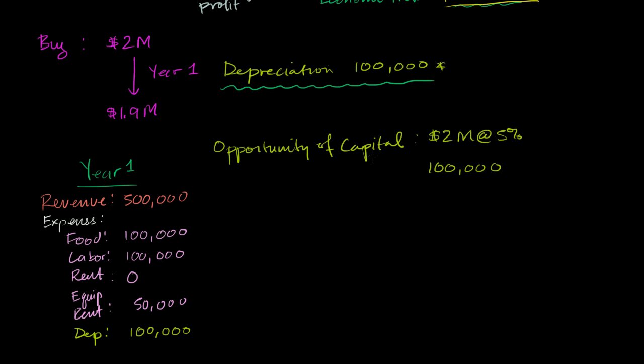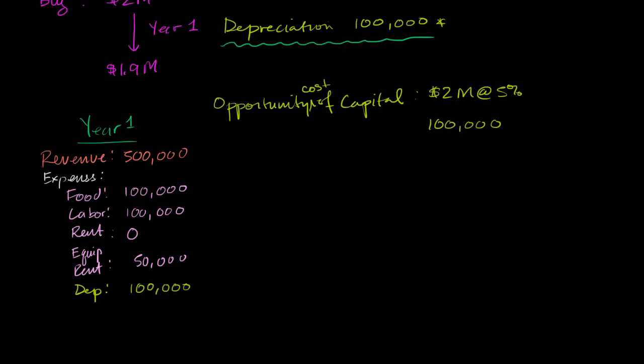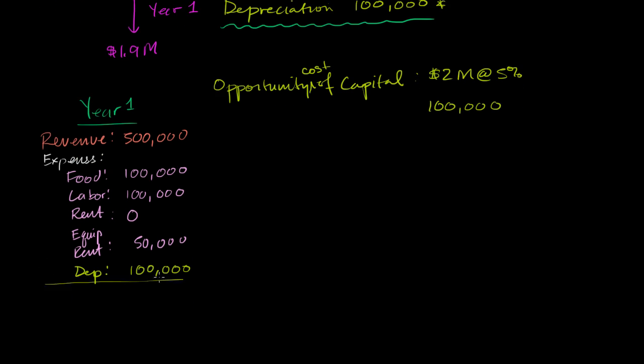We don't think about the opportunity cost of capital, what we could have done with that $2 million that we used to buy the building. And so our pre-tax profit, our pre-tax accounting profit from an accounting point of view, is going to be...